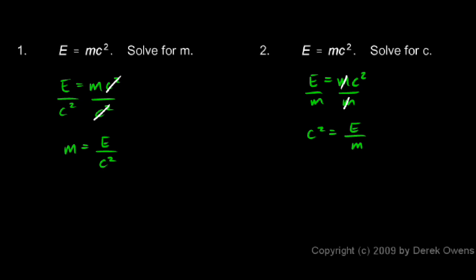And then to solve for C, we have to take the square root of each side. So I take the square root of the left and the square root of the right. On the left, the square root of C squared is simply C. So I have C equals the square root of E over M.